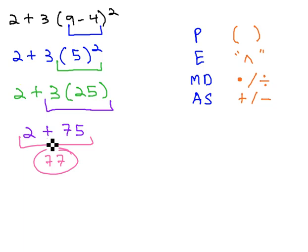Notice we never did 2 plus 3, but rather we did 2 plus 75. If we take shortcuts, you can violate the order of operations, and that will give you the wrong answer.